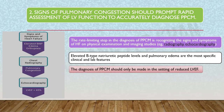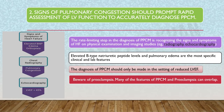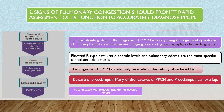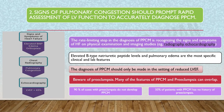The diagnosis of peripartum cardiomyopathy should only be made in the setting of reduced left ventricular ejection fraction. If ejection fraction is greater than 45 percent, look for other causes. Beware of preeclampsia — many features overlap. Ninety percent of cases with preeclampsia do not develop peripartum cardiomyopathy, and 50 percent of patients with peripartum cardiomyopathy have no history of preeclampsia.